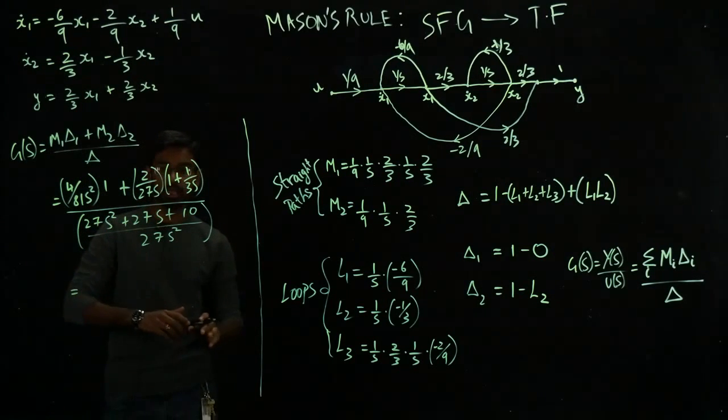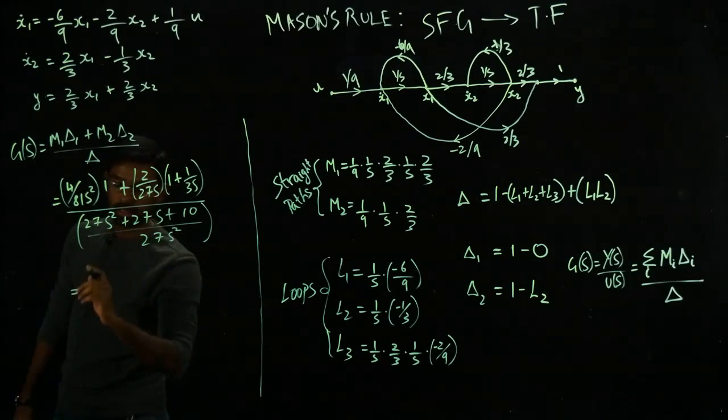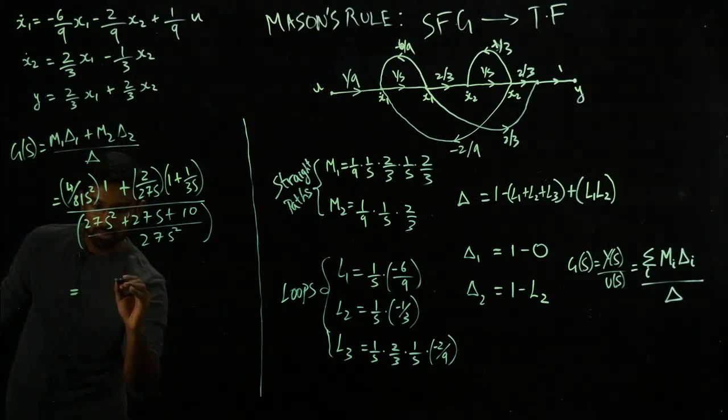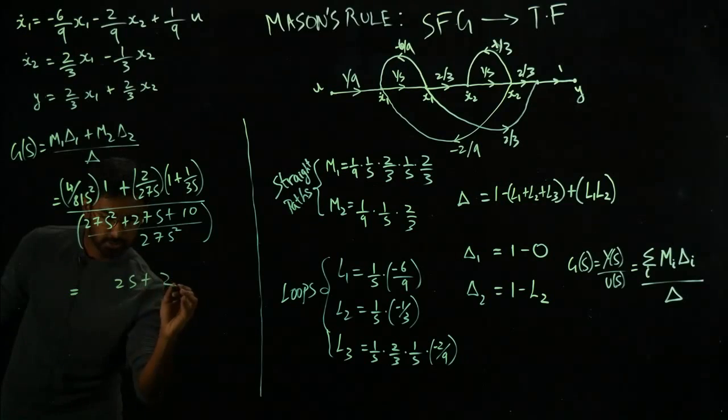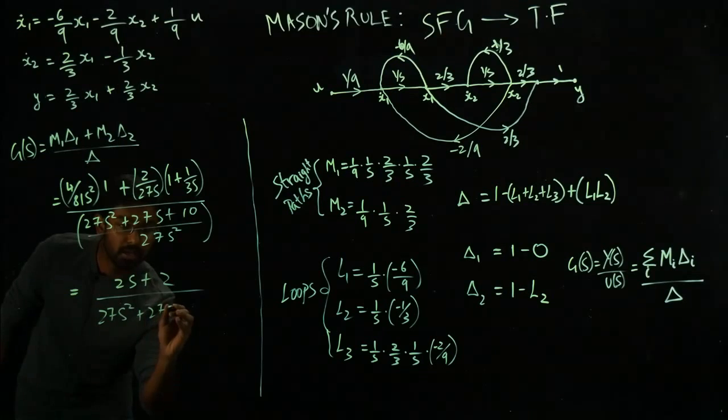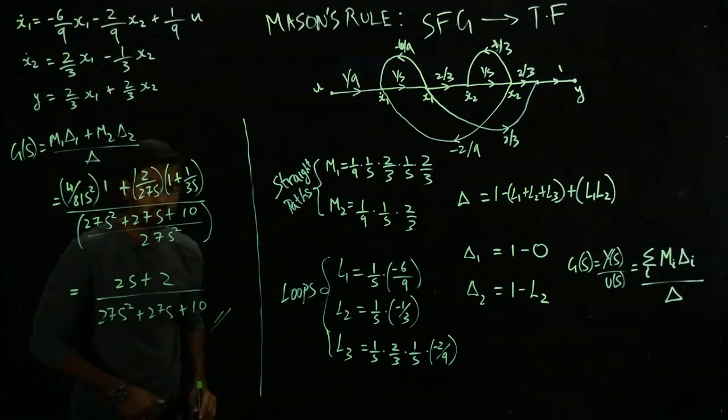Now as you can see, obviously I can take the common factors, pull it down and then arrive at the final transfer function, which will be 2 s plus 2 divided by 27 s squared plus 27 s plus 10.